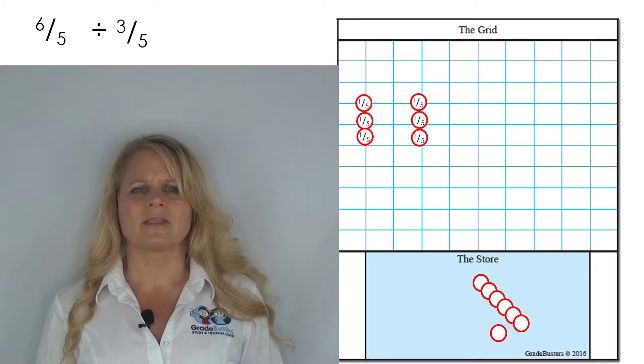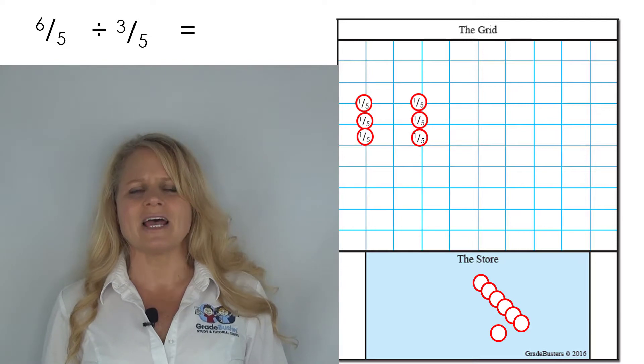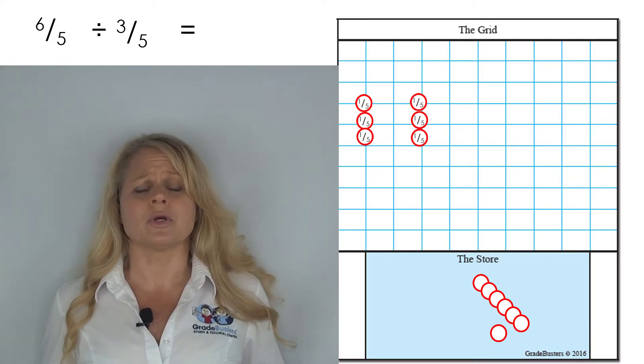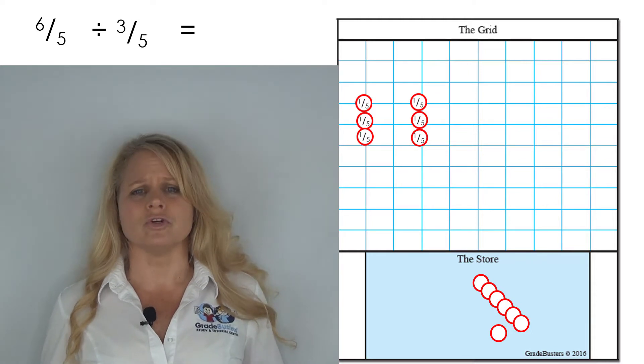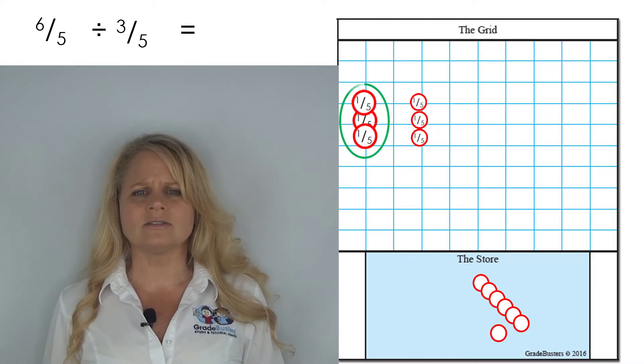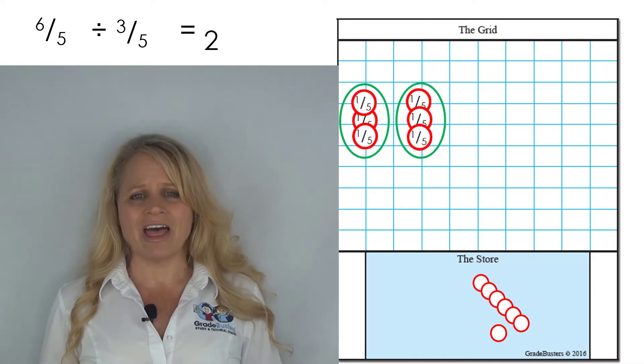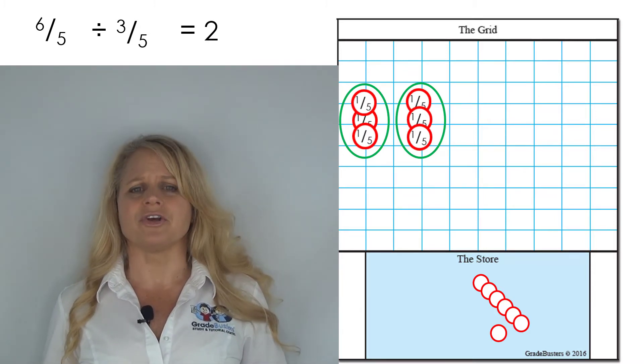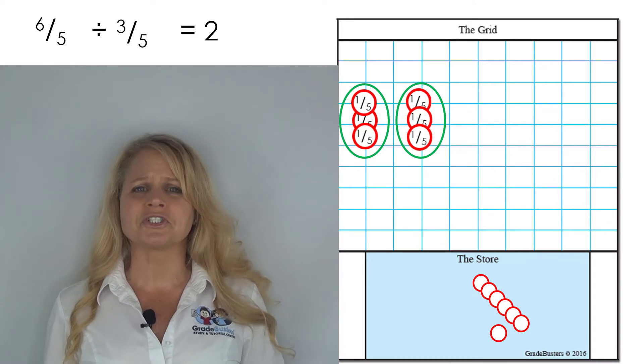The equal symbol tells us to count. Now we know we're doing division, so we're going to count the groups. Here we go: one, two. And that's why six fifths divided by three fifths equals two.